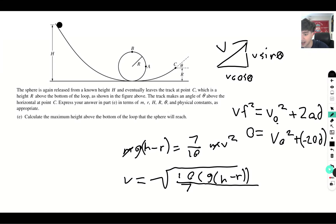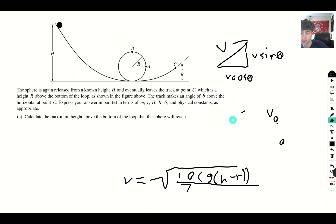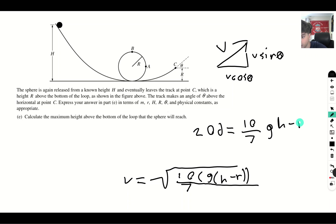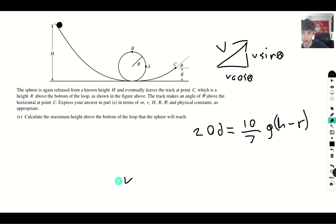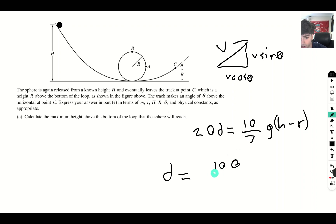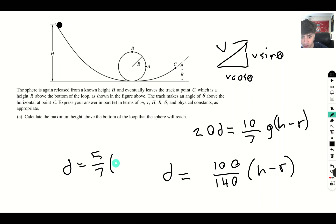Moving terms to isolate d: 20d equals (ten-sevenths) g(h minus r), then dividing both sides by 20 gives d equals (100 over 140)(h minus r) which simplifies to d equals five-sevenths times (h minus r). This is the height gained above point C.